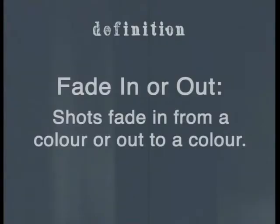Another technique that an editor can use in the editing process is a fade in or fade out. In fade in or fade out shots, the image will fade in from a colour or out from a colour. Black and white fades are the most widely used. Fade ins are often used at the start of a film and fade outs are often used at the end of the film. Sometimes these techniques are also used during a film — in cases like these, they are used to show either the end of a sequence or that a long period of time has passed. Let's look at some examples.